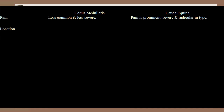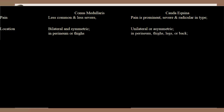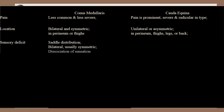The location of pain in conus medullaris is bilateral and symmetric, present in the perineum or thighs. In cauda equina it is unilateral or asymmetric, and is present in the perineum, thighs, legs, or back. The sensory deficit in conus medullaris is in a saddle distribution — it is bilateral and usually symmetric.